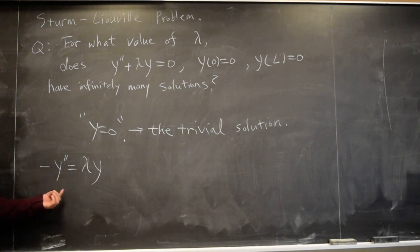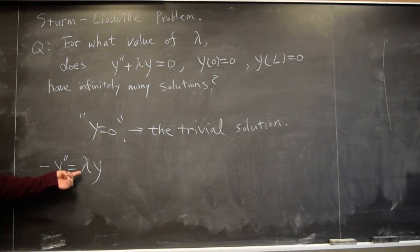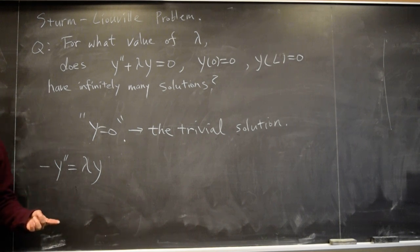And that function that satisfies this one is called the eigenfunction for this Sturm-Liouville problem. And the value of lambda that satisfies it is called the eigenvalue of the Sturm-Liouville problem, okay?